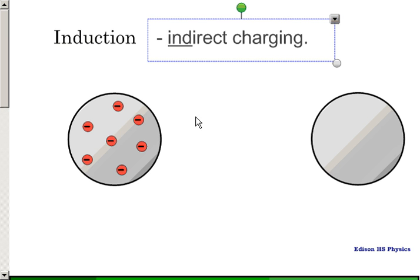So there's no direct contact between the left-hand sphere and the right-hand sphere. Also notable is if the left-hand sphere starts out with a negative charge, the right-hand sphere will end with the opposite charge, so positive.